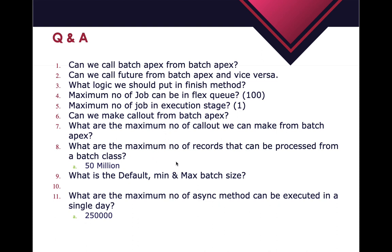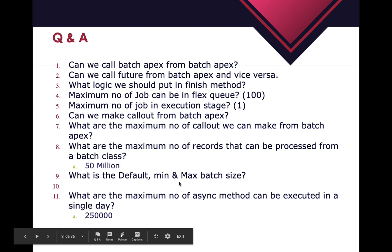What is the maximum number of records that can be processed in a single batch? That is 50 million, equivalent to 5 crores. What is the default, minimum, and maximum batch size? The default batch size is 200, the minimum is 1, and the maximum is 2000 in case of Query Locator. In case of System Iterator, there is no upper limit - the lower limit remains 1 and default remains 200, but there is no maximum batch size.